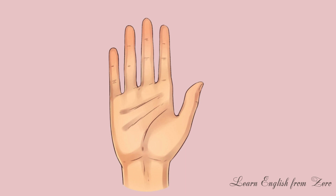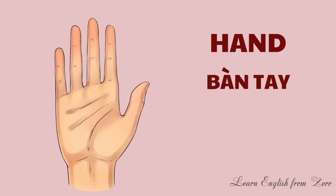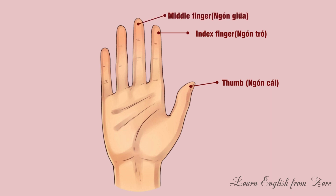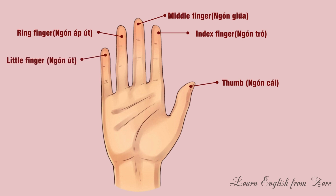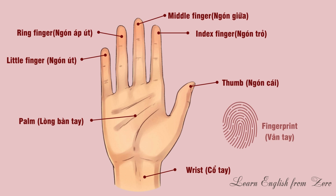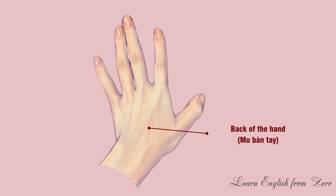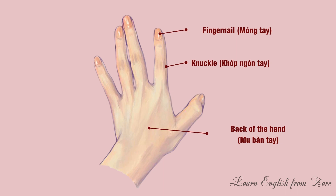Parts of hand. Thumb, index finger, middle finger, ring finger, fingerprint, back of the hand, knuckle, fingernail, phalanges, wrist.